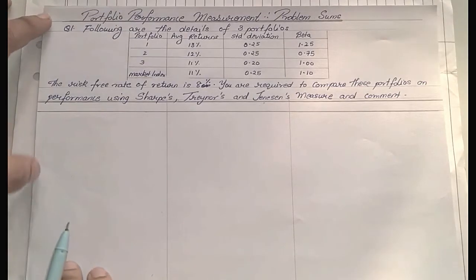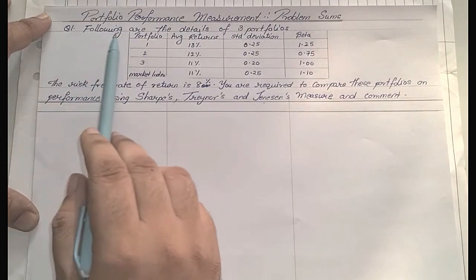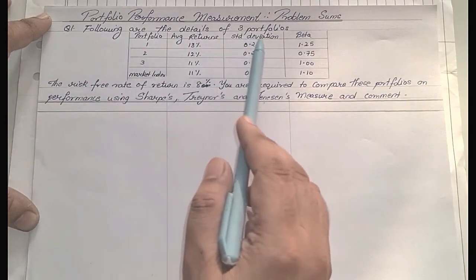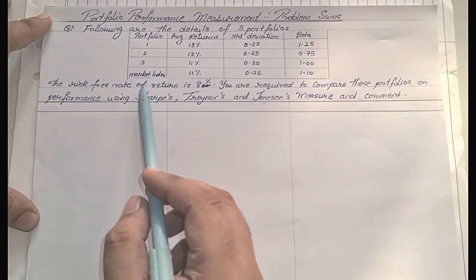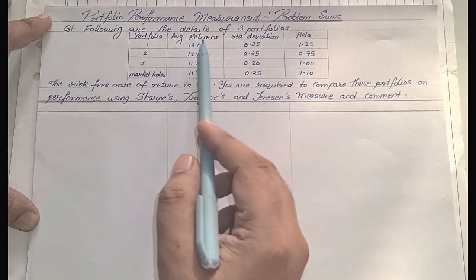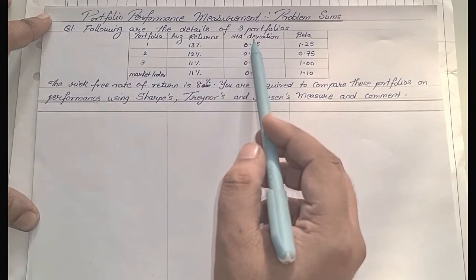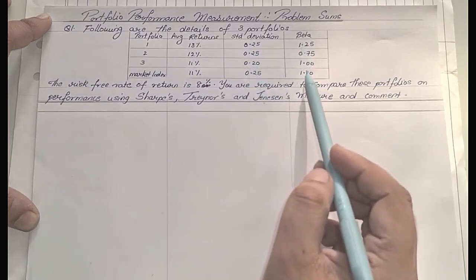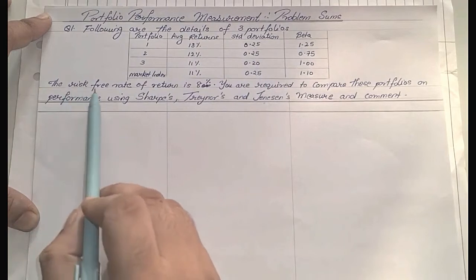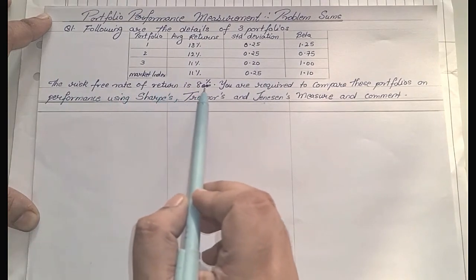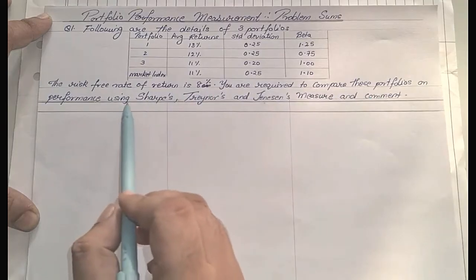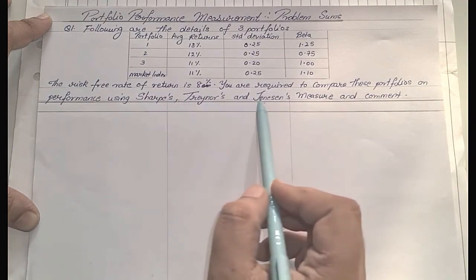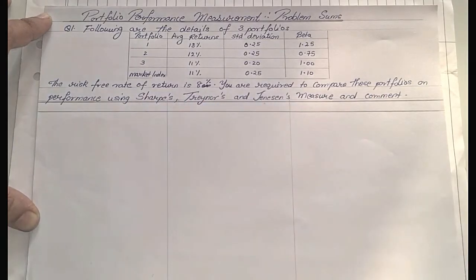We will now read out question one. Given the following details of three portfolios — portfolio one, two and three — and the market index, we are given the average returns, standard deviations and beta. The risk-free rate of return is 8%. You are required to compare these portfolios on performance using Sharpe's, Treynor's and Jensen's measure and comment on which one has outperformed the others.